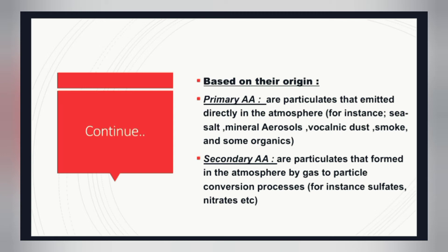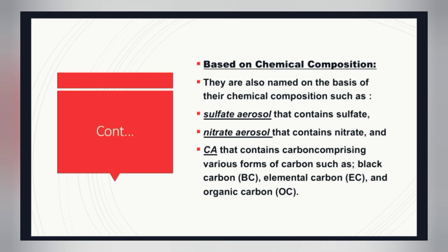Another classification is based on chemical composition. For example, nitrate aerosols are named due to the presence of nitrate ions in their composition. Carbon-based aerosols include black carbon, elemental carbon, and organic carbon. The type of carbon formed depends on the type and amount of combustion — whether oxygenated or non-oxygenated — different forms of carbon can be generated.